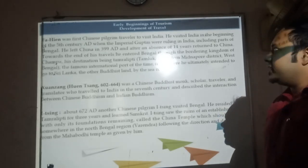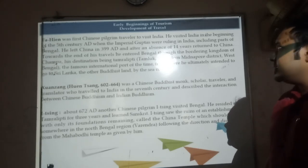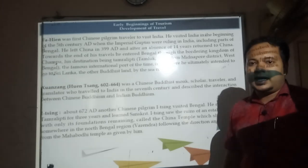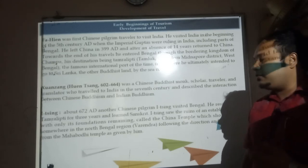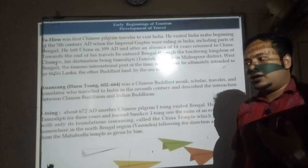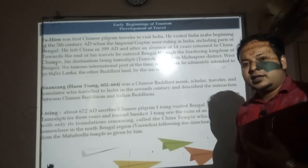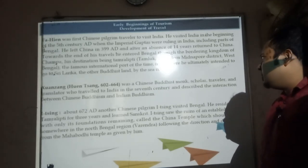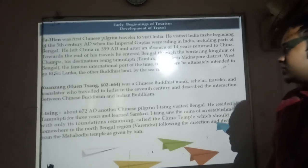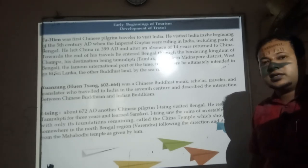Fa Xian was the first Chinese pilgrim to travel to India. He visited India at the beginning of the 5th century AD, when the imperial Gupta were ruling, to explore hospitality and get ideas on how to develop the tourism sector. Xuanzang was a Chinese Buddhist monk who was a scholar, traveler, and translator who traveled to India in the 7th century and described the interaction between Chinese Buddhism and Indian Buddhism, living from 602 to 664 AD.